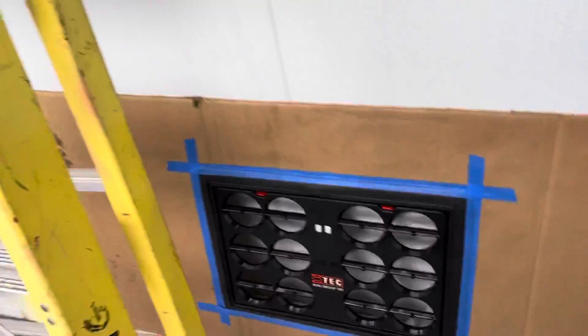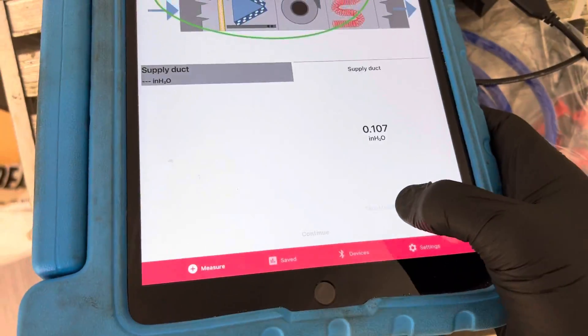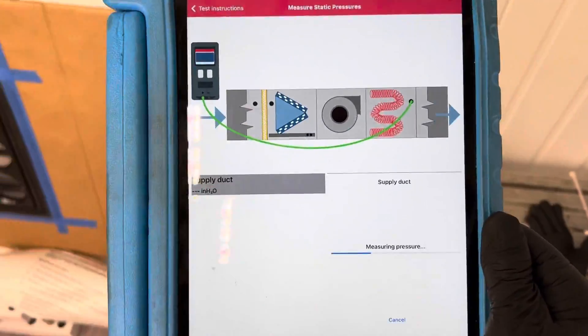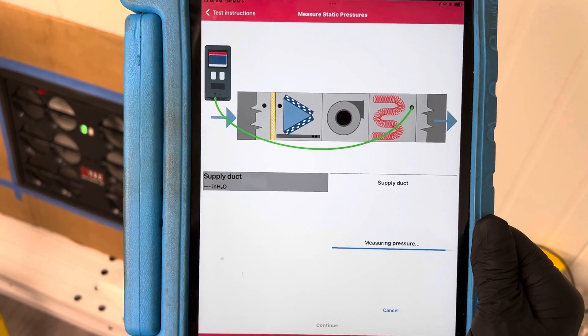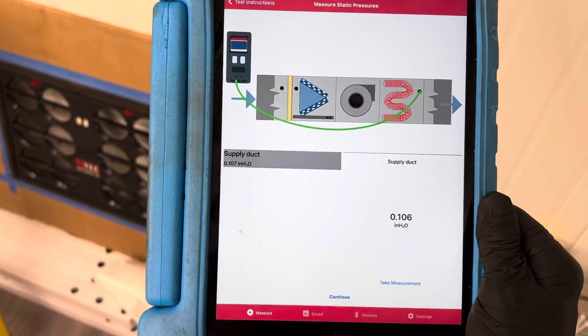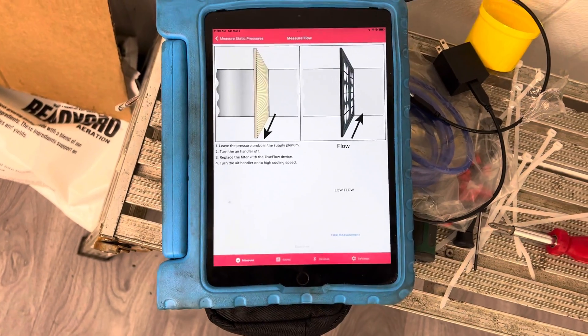Let's take the measurement. I just hit the button. It's taking many measurements within this fraction of time—multiple measurements. There we go, we took the measurement. Now we'll hit continue.